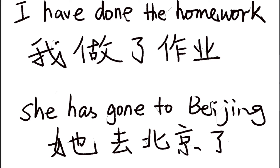It is quite tricky to know when to use 了 after the verb and when to use 了 at the end of the sentence, and it's not easy to learn all the information at once. Actually, 了 is probably the most difficult, most subtle word to learn in Chinese. Enough information for 了 — let's talk about another character next time. Thank you.